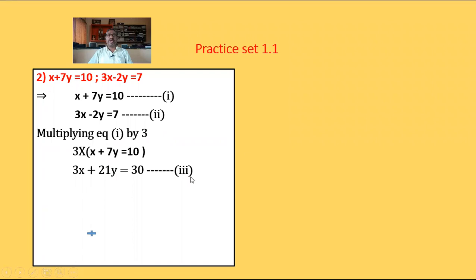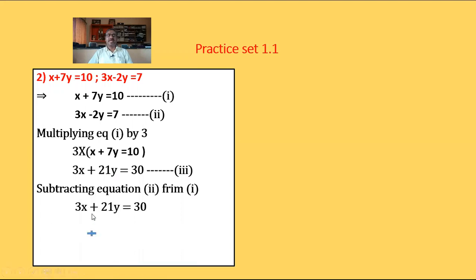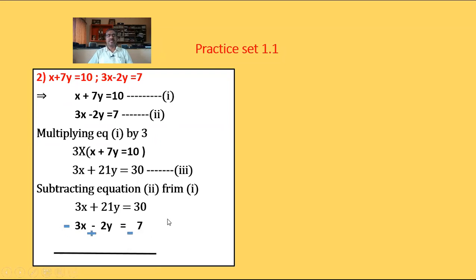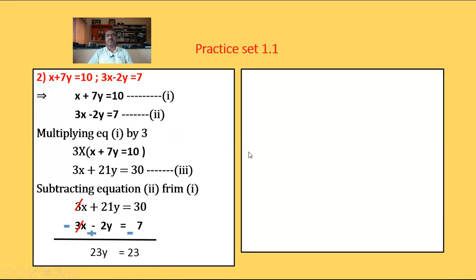From equations 2 and 3, the coefficient of x is the same with the same sign, so subtract equation 2 from equation 3. Equation 3: 3x plus 21y equals 30; equation 2: 3x minus 2y equals 7. Subtracting, 3x minus 3x gets 0. So 21y plus 2y equals 23y equals 30 minus 7 equals 23. Hence y equals 23 upon 23 equals 1.